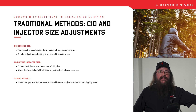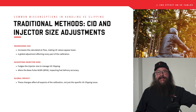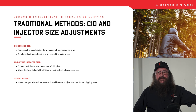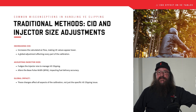Traditionally, tuners have dealt with VE clipping by either increasing the engine's CID or adjusting the injector size. While these methods might seem effective initially, they're not precise. Increasing CID artificially lowers VE values by making the engine think it has more air flowing through it than it does — it increases the calculated airflow. But because this is a global adjustment, it impacts every other part of your calibration.